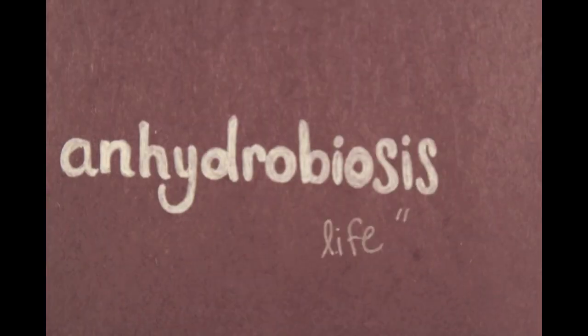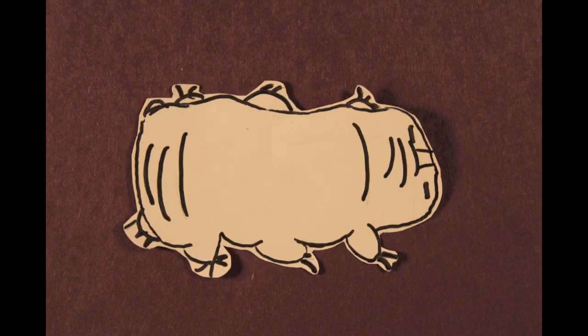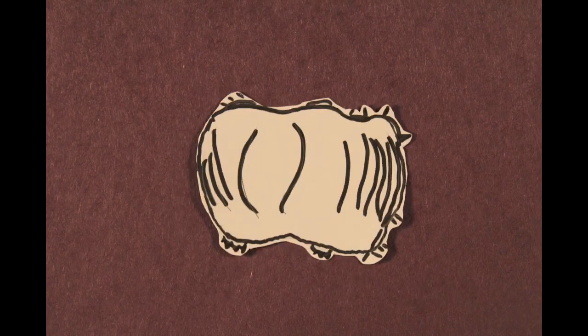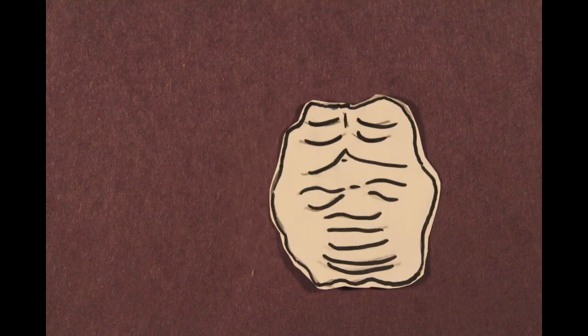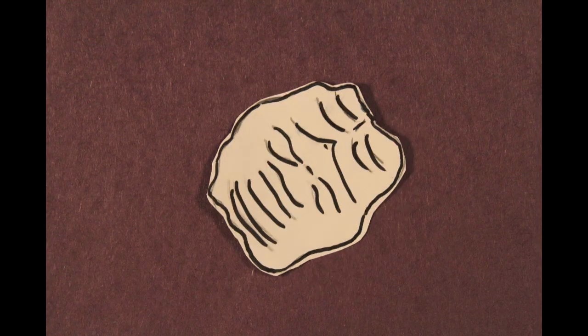Anhydrobiosis is the answer. They dry up like a raisin, little tardigrade legs retract. It's a form of hibernation. This body form is called a tun.